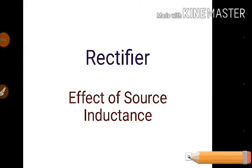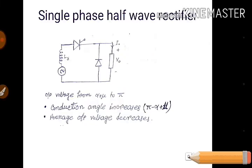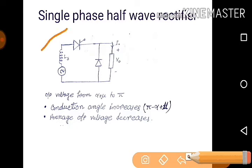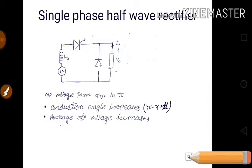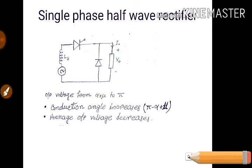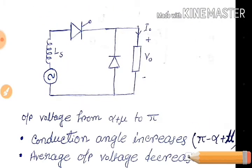This is a very important topic of power electronics. It is the effect of source inductance on a rectifier. You have the idea about the operation of rectifiers, but let's see what will happen if we introduce a source inductance on the rectifier side — just after the source, if we introduce an inductance, what will happen?